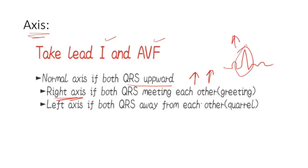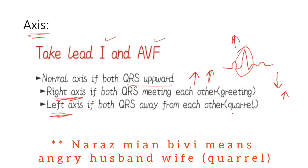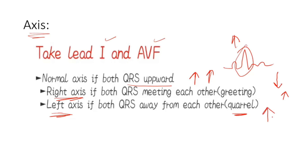For right axis deviation, Lead I will be downward and AVF will be upward — they are meeting each other, facing together. For left axis deviation, they are quarreling with each other, fighting — they go in opposite directions.